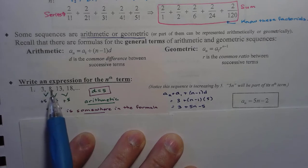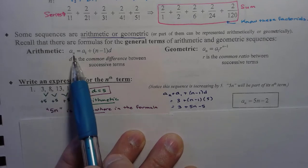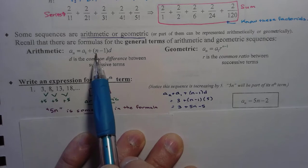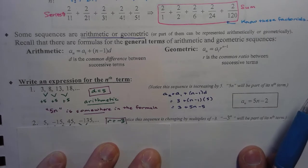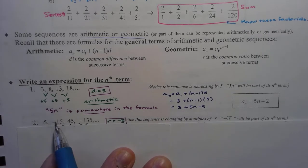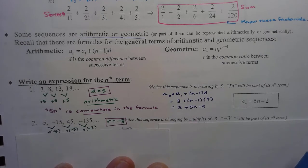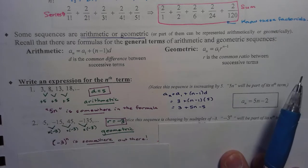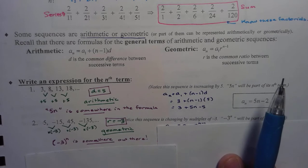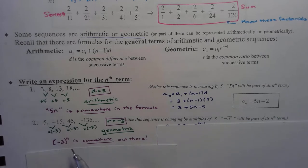To get to my second term, I'm adding one common difference. To get to my third term, A sub 3, I start at A sub 1 and add 3 minus 1 — two common differences. Now if we look at this sequence, you can see the signs are alternating. That means we cannot be adding to each term to get the next one; we must be multiplying. We appear to be multiplying by negative 3, so our common ratio is negative 3 and we have a geometric sequence. That means 3 to the n will appear somewhere in our formula.